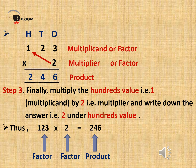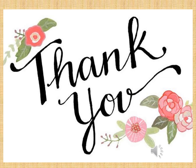So dear students, 123 and 2 are our multiplicand and multiplier, which are also known as factors, and the answer we get after multiplying is 246, which is known as the product. I hope this helps you understand the multiplication of a 2 digit number by a 1 digit number, and a 3 digit number by a 1 digit number, without carry over. Practice more and more sums dear students. Thank you very much.